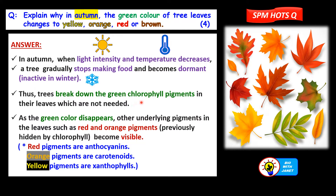The trees do not need the green chlorophyll pigments for that period, and they will break down the green chlorophyll pigments in their leaves. As the green chlorophyll pigments are broken down, other colours emerge — the underlying pigments in the leaves, such as red and orange pigments, become more visible. Red leaves contain anthocyanins; orange leaves have carotenoids; and yellow leaves contain xanthophylls. Remember at least one of these — one mark each per point, and take note of the keywords.